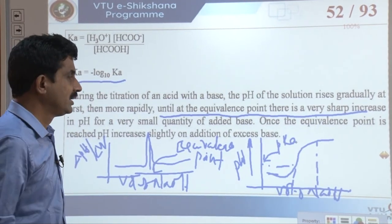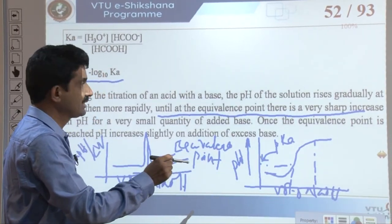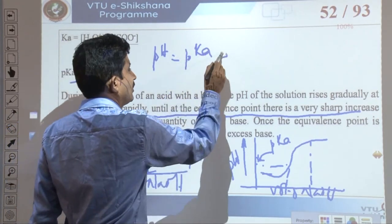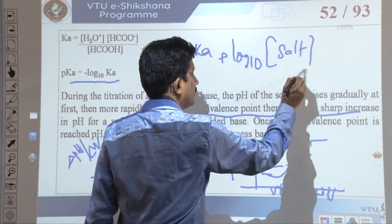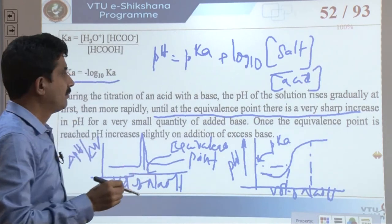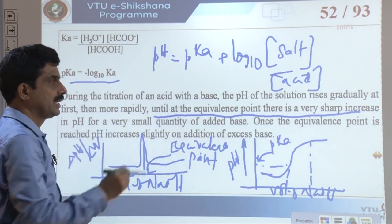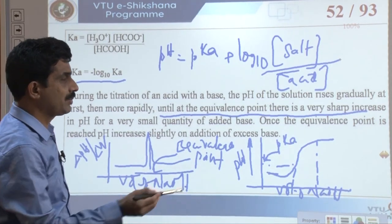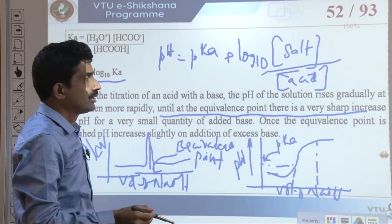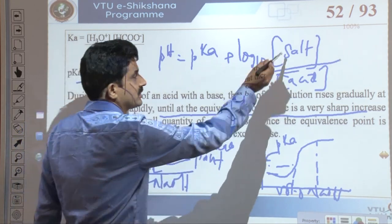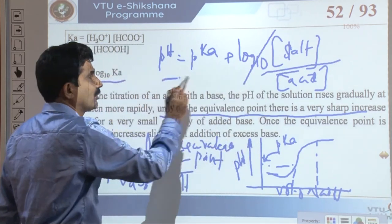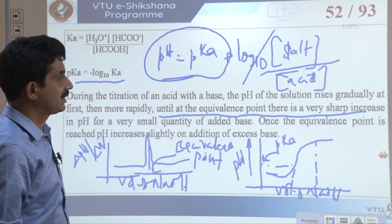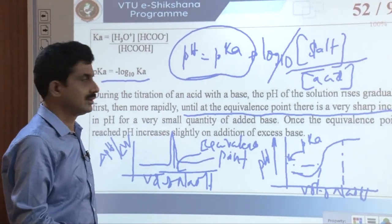This determination is based on the Henderson-Hasselbalch equation: pH = pKa + log([salt]/[acid]). At the half equivalence point, half of the acid is converted to its salt, so [salt] = [acid], making log([salt]/[acid]) = log 1 = 0. Therefore, pH = pKa at the half equivalence point. This is how pKa values of weak acids are determined with the help of the glass electrode.